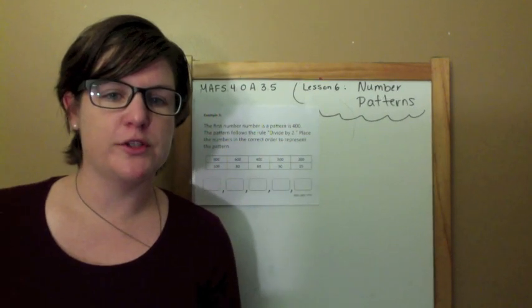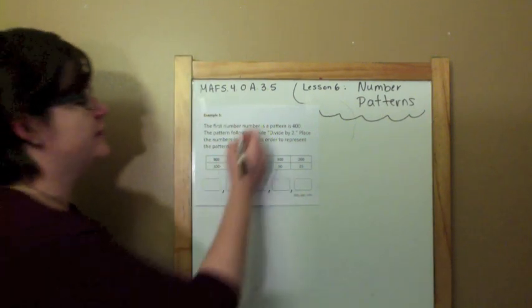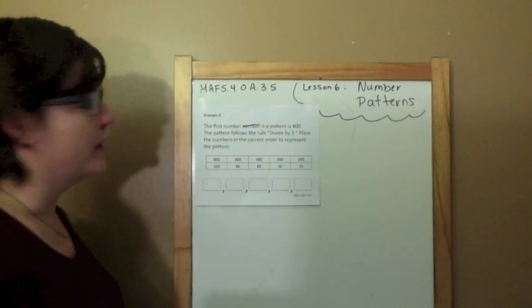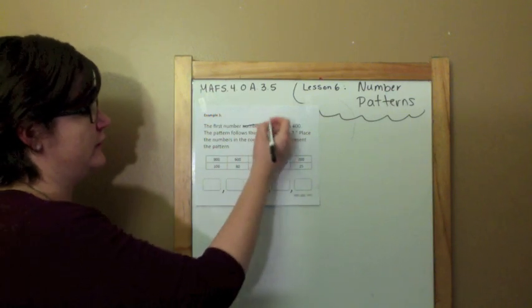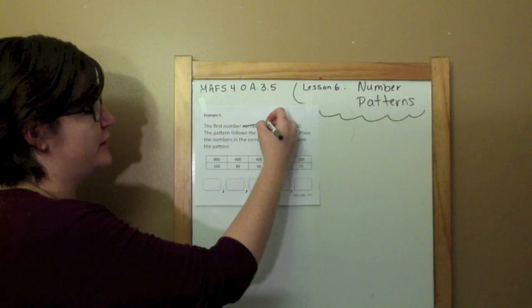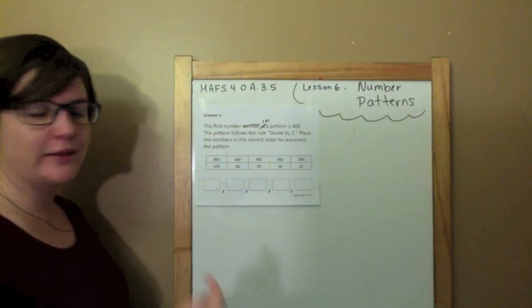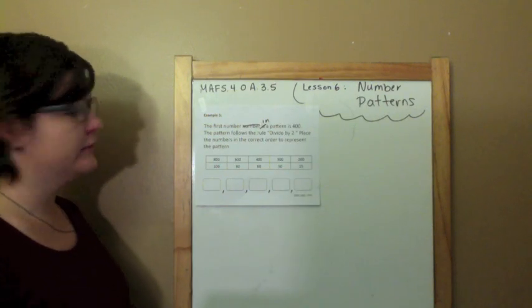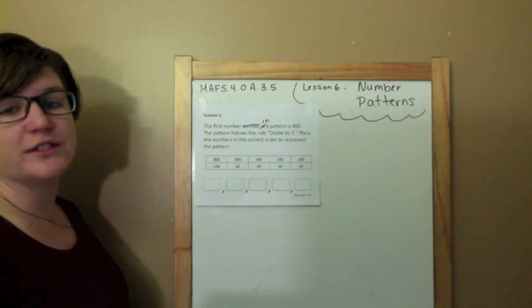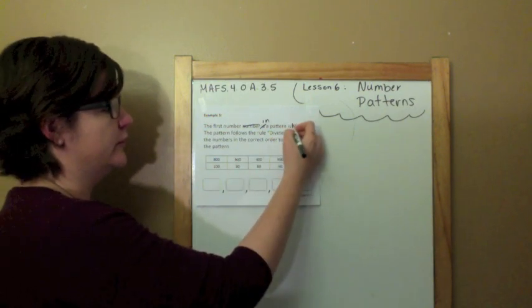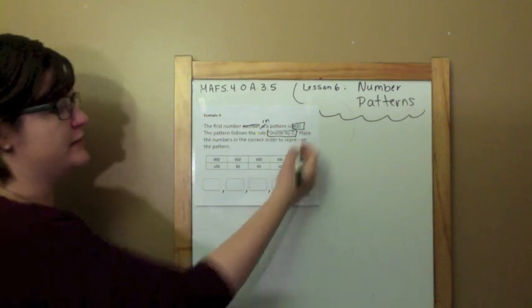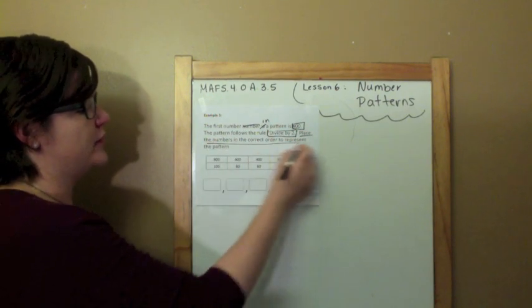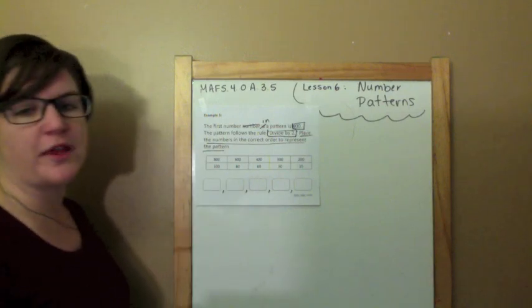The first number in a pattern is 400. The pattern follows the rule, divide by 2. So, the first number is 400. It follows the rule, divide by 2. Place the numbers in the correct order to represent the pattern.